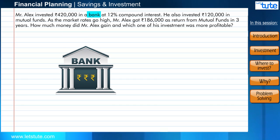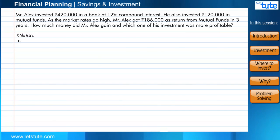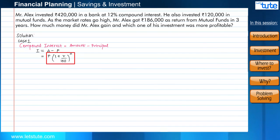Here we can see that we have two places where Mr. Alex has invested the money: the bank and mutual funds. It's not a very difficult question. It clearly says that we need to find the gain by Mr. Alex and which one of his investments was more profitable. Let's start with the solution. Mr. Alex invested ₹420,000 in a bank at 12% compound interest. Here it is important that you should remember the formula for compound interest, which is Amount minus Principal. Now Amount is calculated by this formula: P(1 + R/100)^n. Here we will take P common, which will give us the final formula for compound interest.